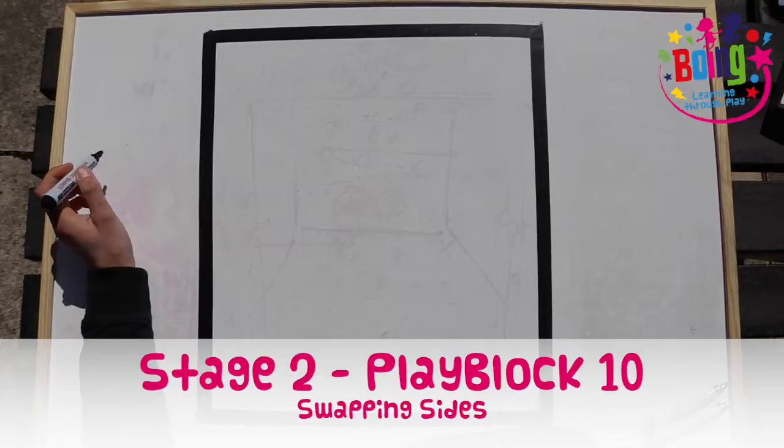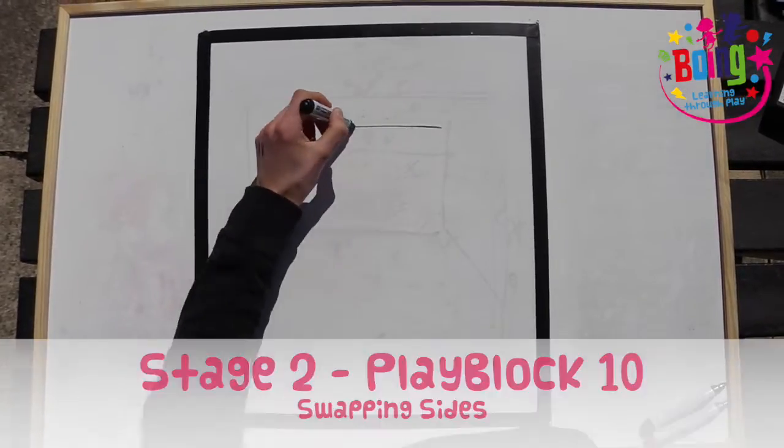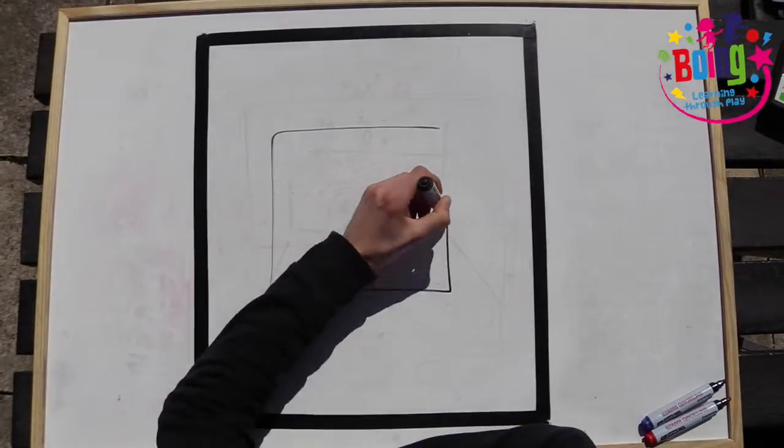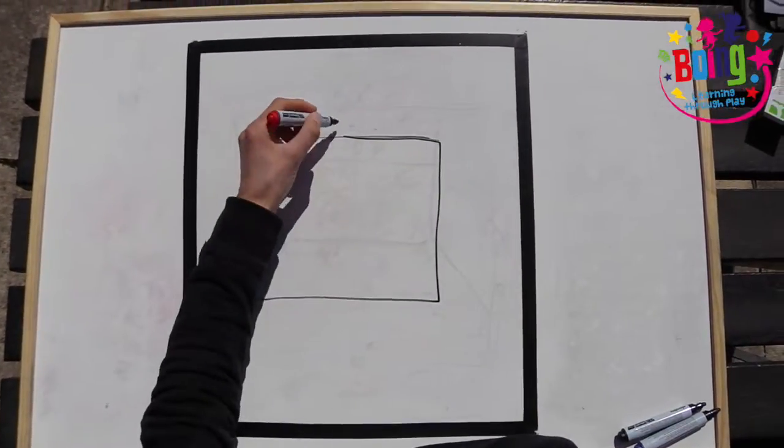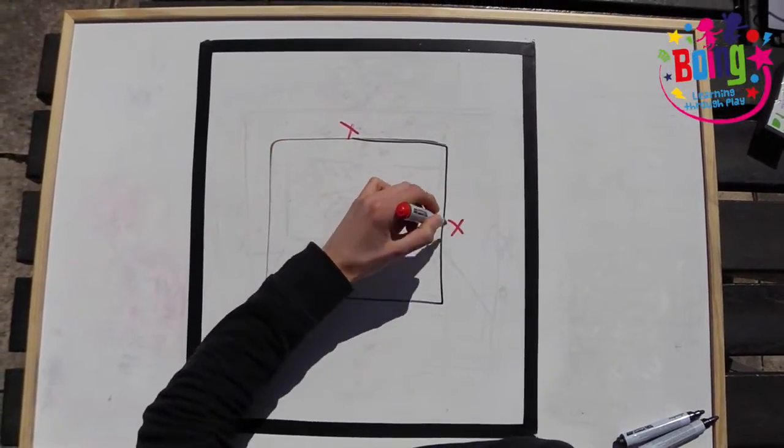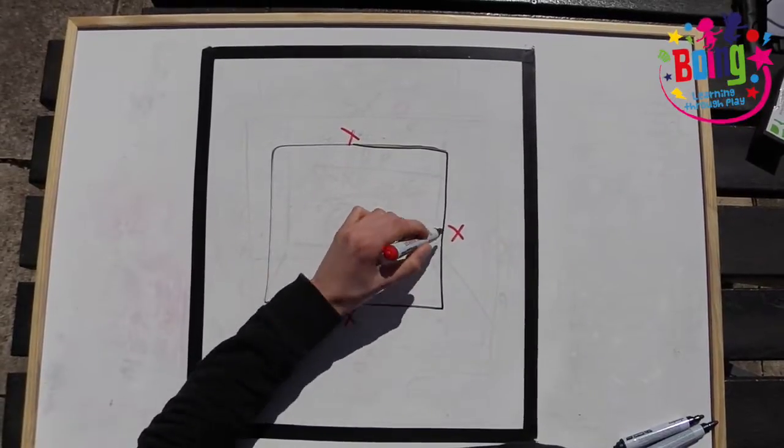Here's how to play swapping sides. Create a square inside the space you are working on. On the outside of the square, three children must stand with a ball each.